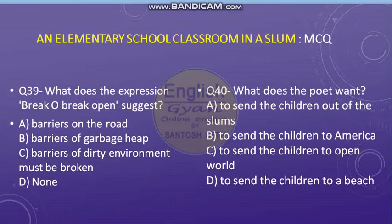Question number 39: What does the expression 'brick or brick open' suggest? Options: A — barriers on the road, B — barriers of garbage, C — barriers of dirty environment must be broken, and D — none. Question number 40: What does the poet want? Options: A — the poet wants to send the children out of the slums, B — he wants to send the children to America, C — he wants to send the children to the open world, and D — he wants to send the children to a beach.